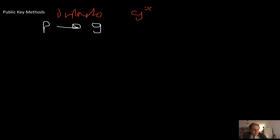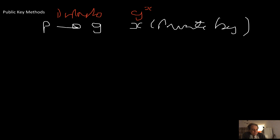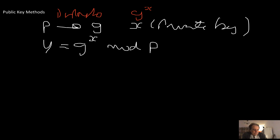Another alternative uses discrete logarithms. The ElGamal encryption method is based on discrete logs. We start with a prime number P, then create a generator value G. We then create our private key X — this should not be shared with anyone. We then calculate Y, which is equal to G to the power of X, mod P.